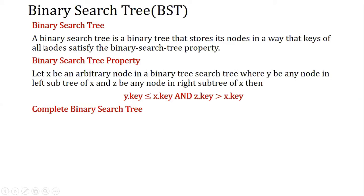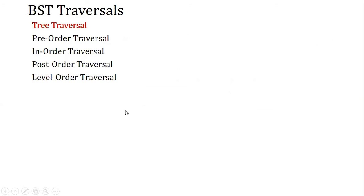A binary search tree stores its nodes in a way that all keys satisfy the BST property. If x is an arbitrary node, y is any node in the left subtree of x, and z is any node in the right subtree of x, then z's key should be greater than x's key and y's key should be less than or equal to x's key.